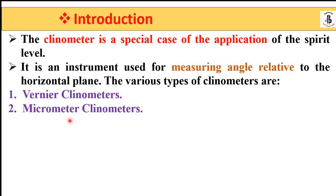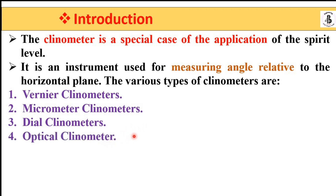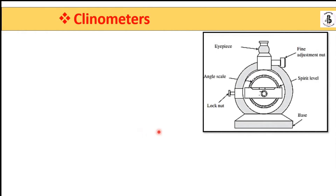As per the different ranges and applications, clinometers are used in the field of metrology. The basic construction of the clinometer consists of a base, which is directly fixed or resting onto the surface of the workpiece or the machine table. There is an inbuilt spirit level that helps in easily positioning with respect to the horizontal plane. Around the instrument there are angle scales used for taking readings during measurement. There is also a lock nut.